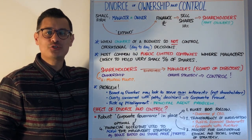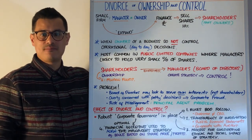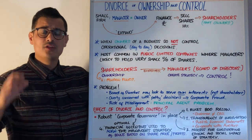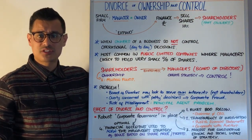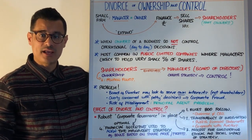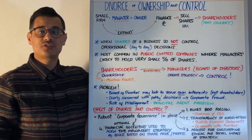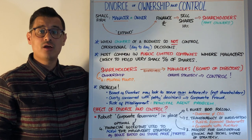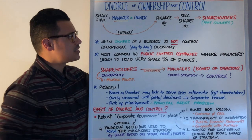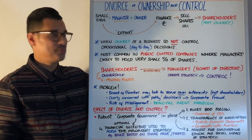Let's have a session on the divorce of ownership and control. It's very common for a small firm that the owner and the manager are the same person. However, the small firm over time might want to expand and grow the business. In order to do that, they may need some finance, and to get that finance they might have to sell shares in the company — say 10% of the shares to new shareholders, who would essentially be part-owners of that business.